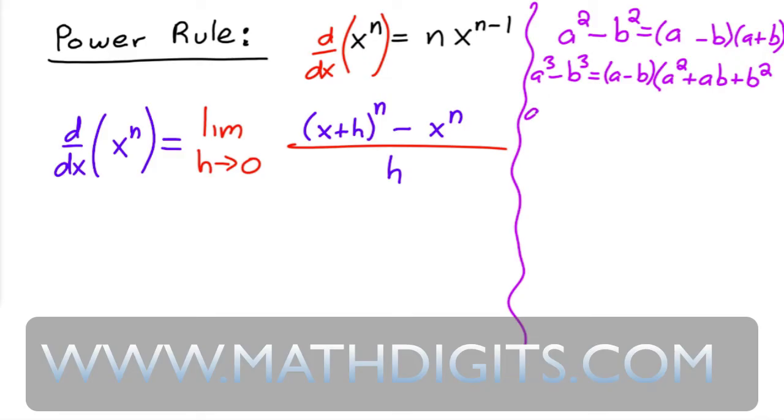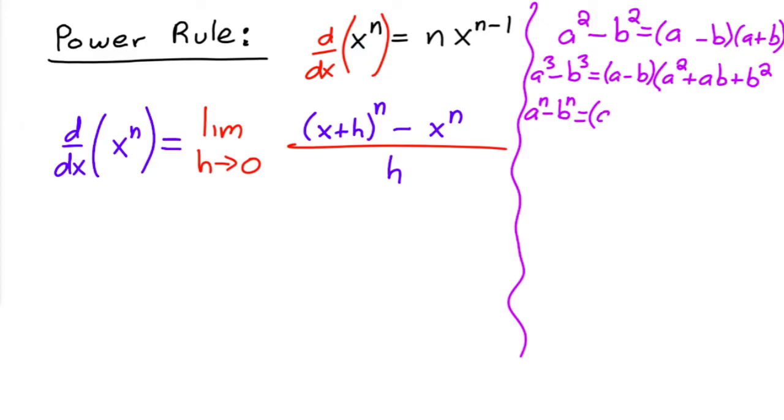And so you can keep doing this until you get to the general case, which is going to be a to the n minus b to the n equals a minus b, and then you're going to have a to the n minus one, so one less than whatever this guy is, plus...